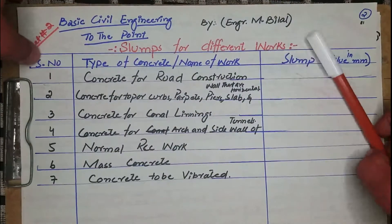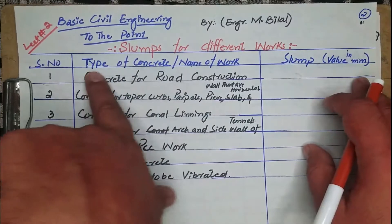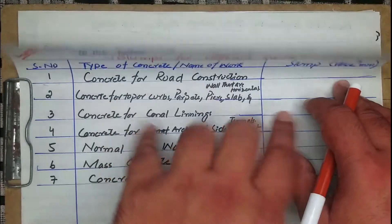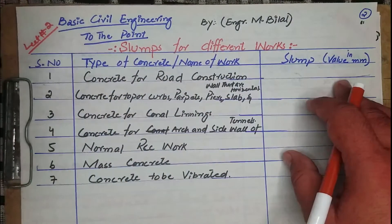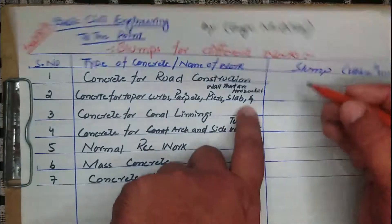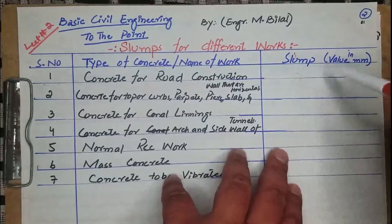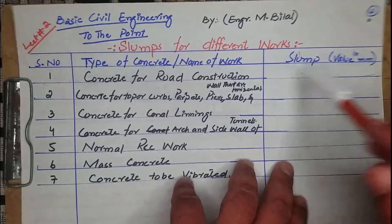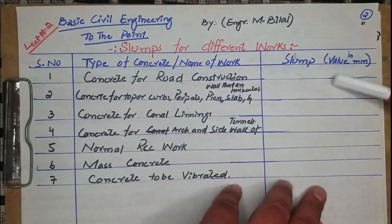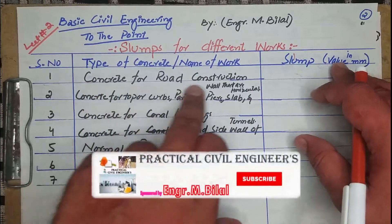The table here shows the serial number, type of concrete or name of work, and the slump value in mm. The slump value is physically found out by the help of a slump cone or by performing the slump test, which is also called the workability test.